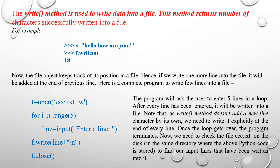In file handling, the write method is used to write data into a file. This method returns the number of characters successfully written into the file. For example, if s equals 'hello how are you', this string is stored in s. Running this code, the Python interpreter will print the number of characters — in this string there are 18 characters.